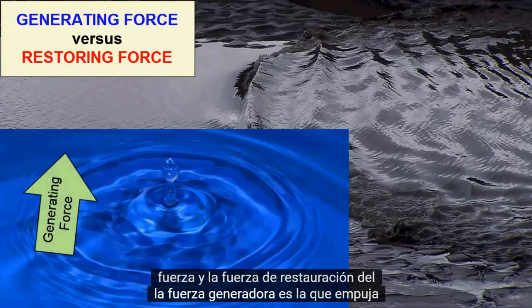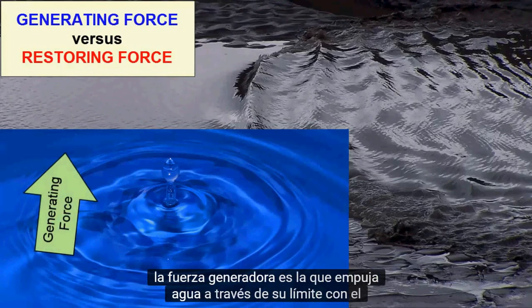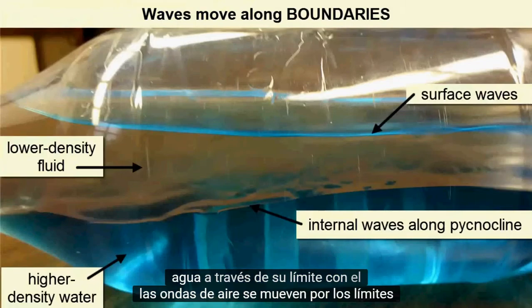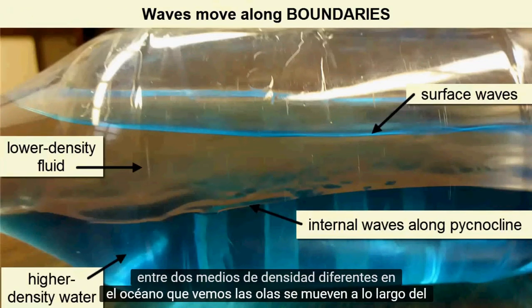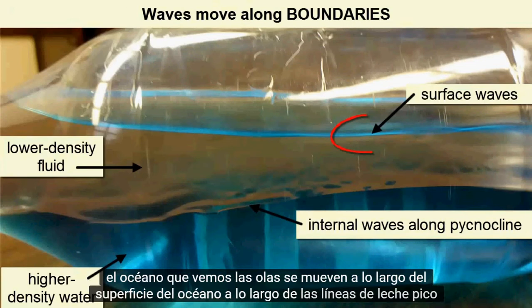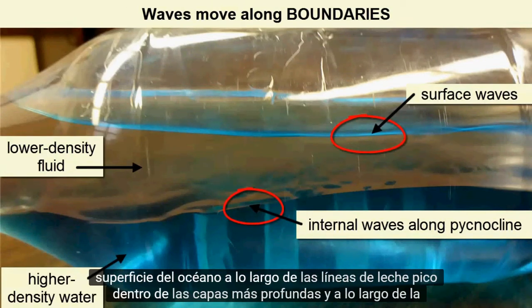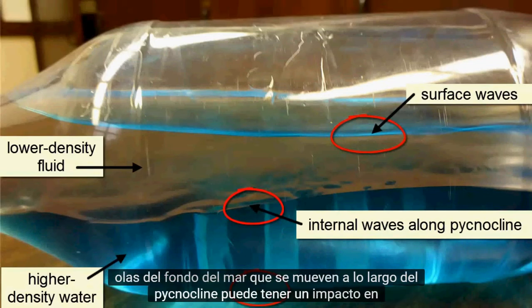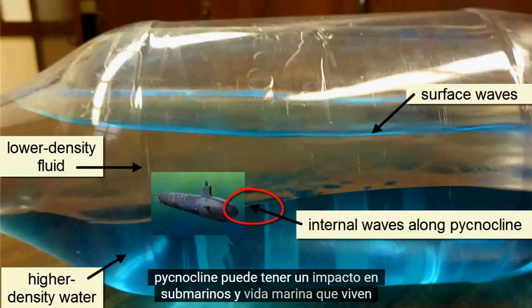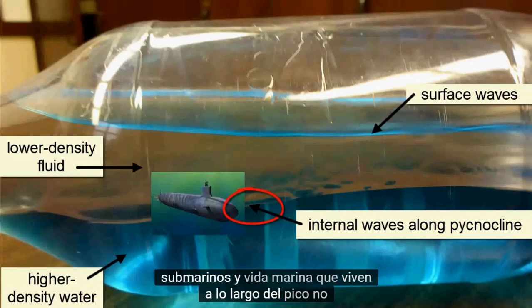The generating force is the one that pushes water up across its boundary with the air. Waves move along the boundaries between two different density mediums. In the ocean, we see waves move along the ocean surface, along pycnoclines within the deeper layers, and along the sea floor. Waves that move along the pycnocline can have an impact on submarines and marine life that live along the pycnocline.